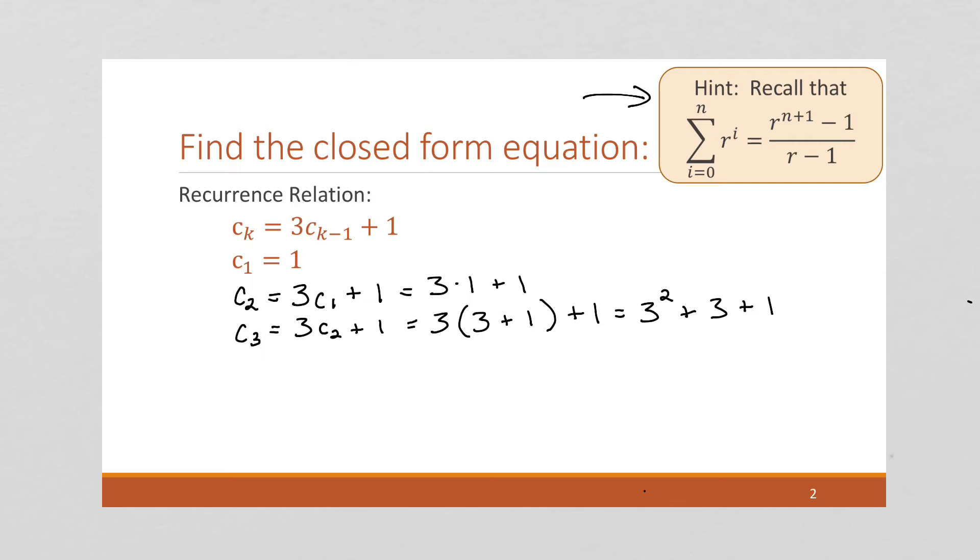Okay, so let's continue. This is going to be 3 times c sub 3 plus 1, which is going to be 3 times 3 squared plus 3 plus 1. And I'm going to partially simplify it to this is 3 cubed plus 3 squared plus 3 plus 1.